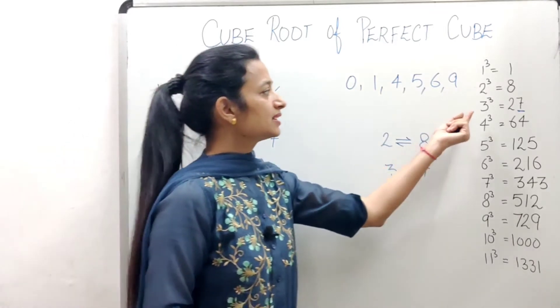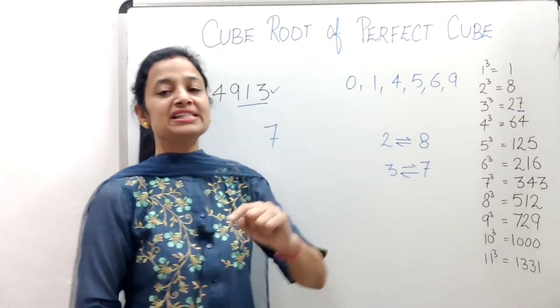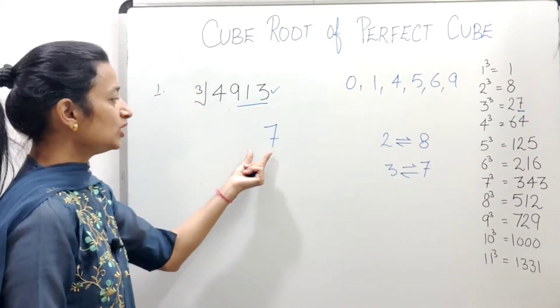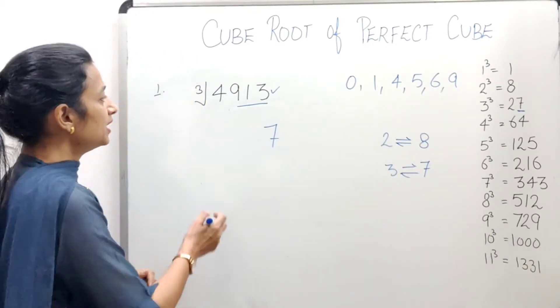So we will directly write 7. You can also see here that 3 cubed is 27, and at the unit place of 27, what is there? 7 is there. So we have to write the unit place number here.